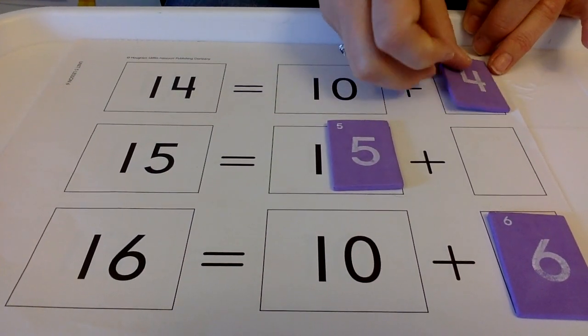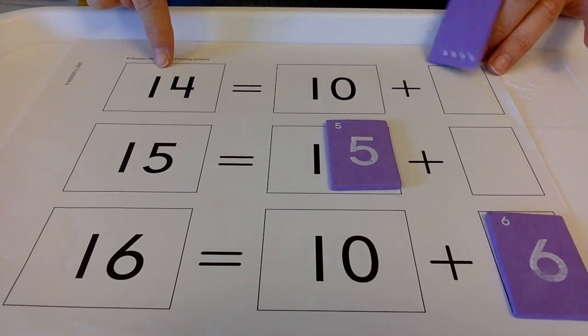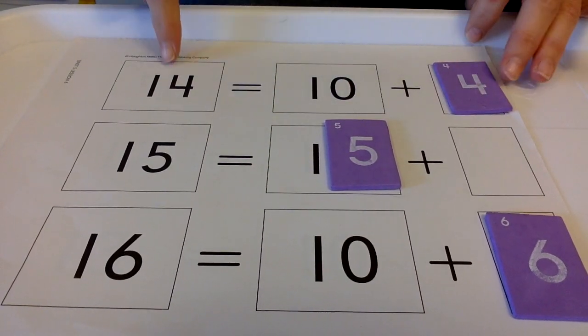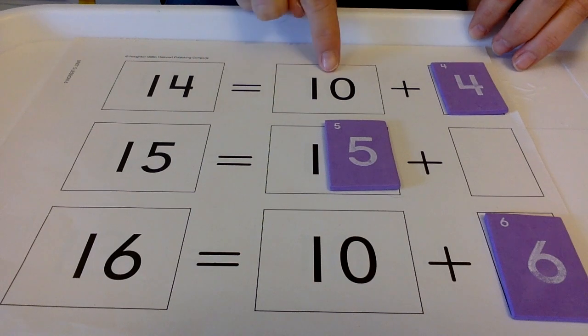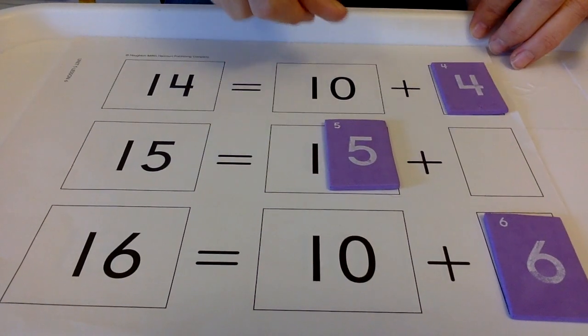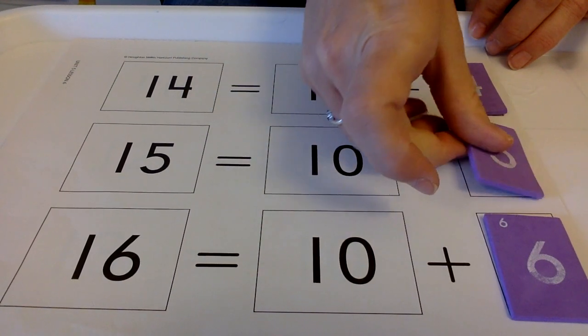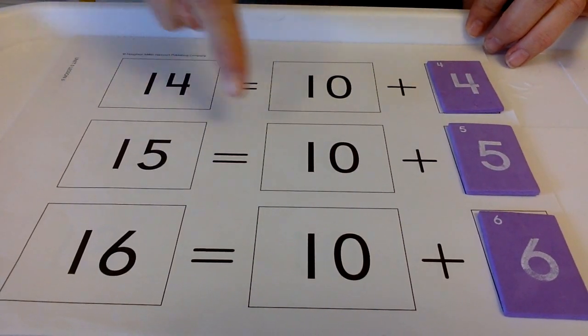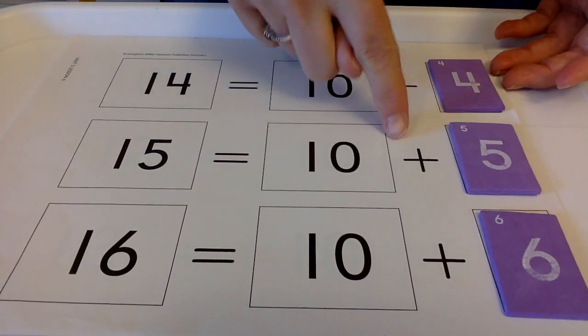Let's do 14. 14 equals 10 plus 4. And 15, so we move the 5. 15 equals 10 plus 5.